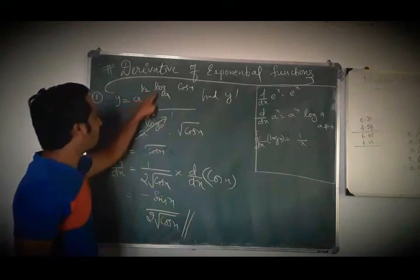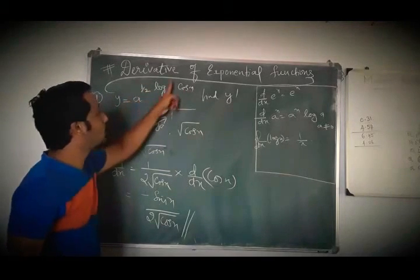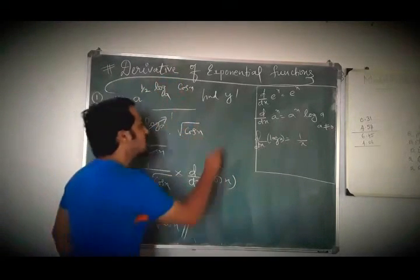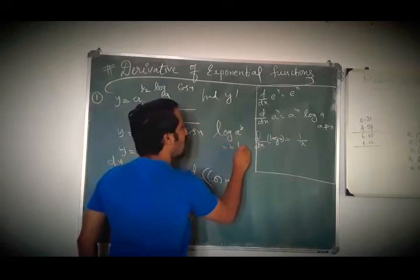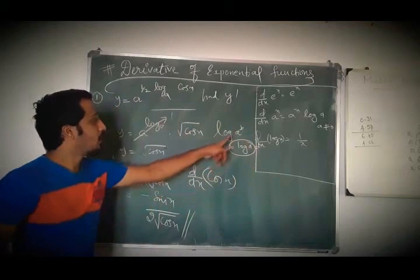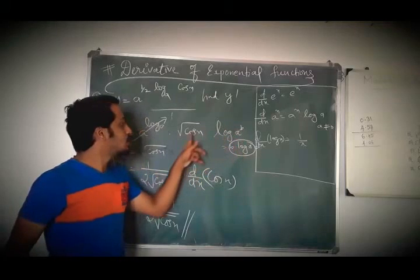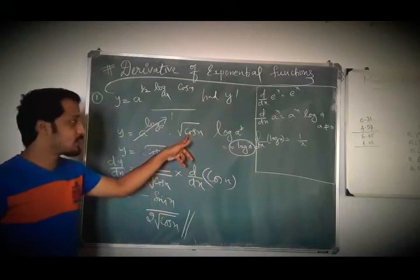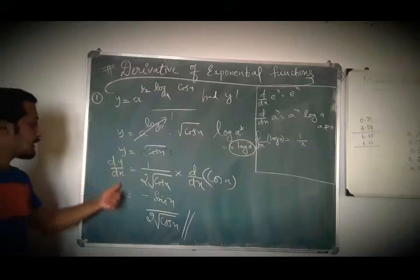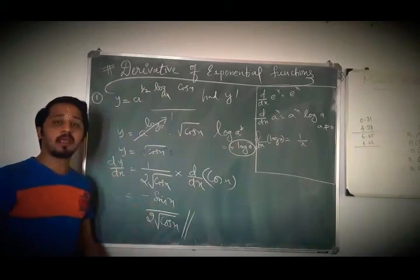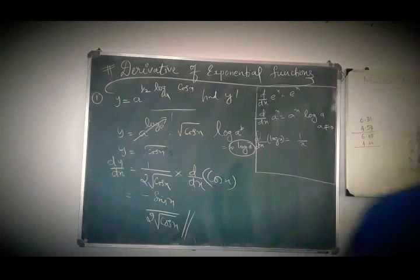To clarify: a^(½ log_a cos x) — I am taking the power ½ into the whole power, which means it becomes √cos x. That is log of a^b form. Here b is ½ and a is √cos x, so cos x to the power ½ is √cos x. Therefore y = √cos x, and dy/dx = −sin x / (2√cos x). Second question: y = e^(−x), find y'.